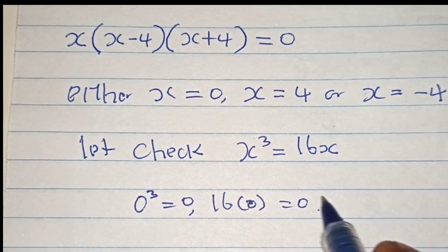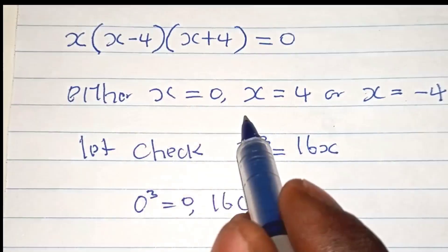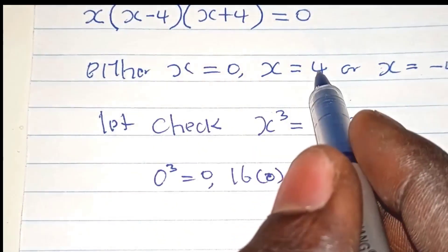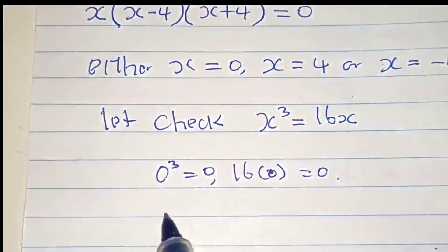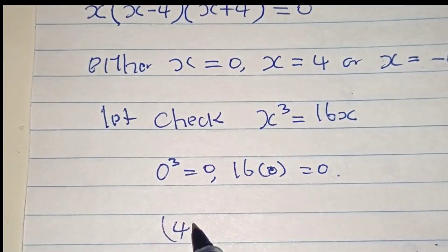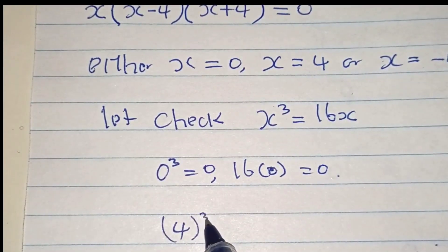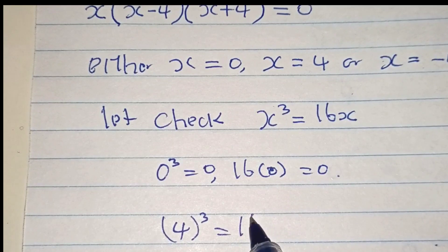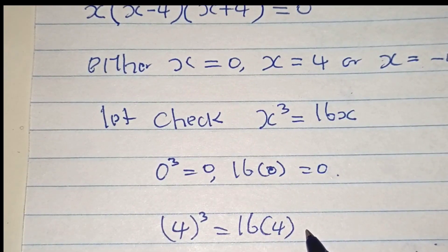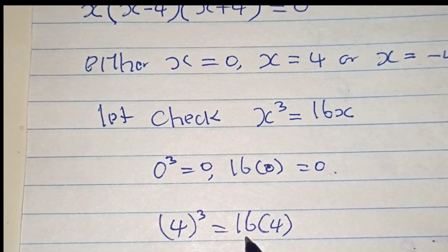That satisfies the equation. Number two: x equals to four — substitute the value of x equals to four into the original equation. 4 to the power of 3 is equal to 64, and 16 times 4 equals to 64 also.